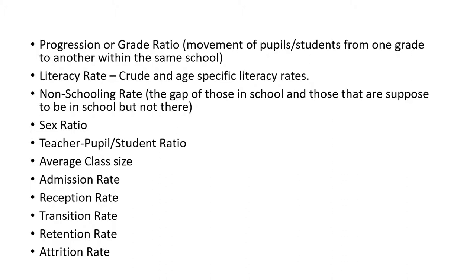To calculate the attrition rate, you look at the number of students that depart before completing the program at a level in a year, divided by the total enrollment at that level in the same year, times 100. Attrition is different from dropout because dropout is mostly associated with academic performance — the student could not measure up academically. Attrition is not associated with academic performance; there are many reasons it can occur, such as lack of funds to continue or other personal reasons.